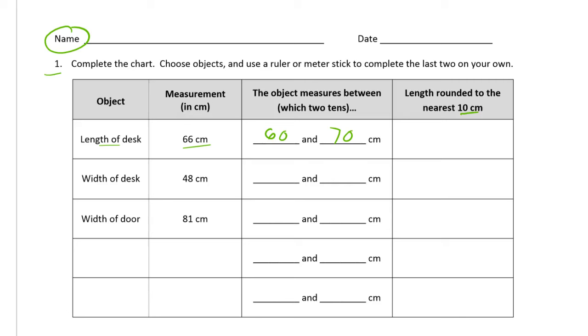The width of a desk, so like maybe it's a square desk—the long side is 66 and the shorter side is 48. And 48 would be in between 40 and 50, and it's closer to 50, so it's 50 centimeters.